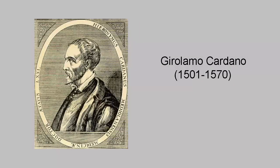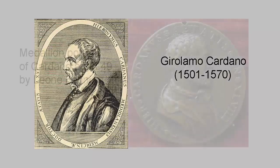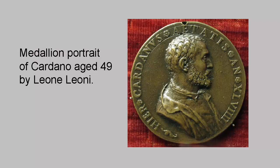Girolamo Cardano was born in Pavia in Lombardy, Italy in 1501. He was an illegitimate child of a mathematically gifted lawyer who was a friend of Leonardo da Vinci. He entered the University of Pavia in 1520 and later studied medicine at Padua. Cardano wanted to be a physician in one of the wealthier cities like Milan, but he was refused membership of the College of Physicians because of his illegitimacy and also because he was considered a troublemaker with an aggressive personality. Eventually his skill and intelligence in medicine was recognized, and in later life he became a distinguished physician much in demand in the royal courts, and he gave one of the first clinical descriptions of typhoid fever.